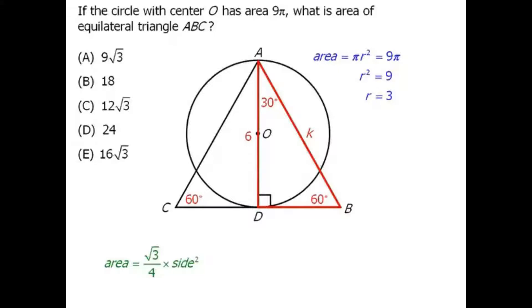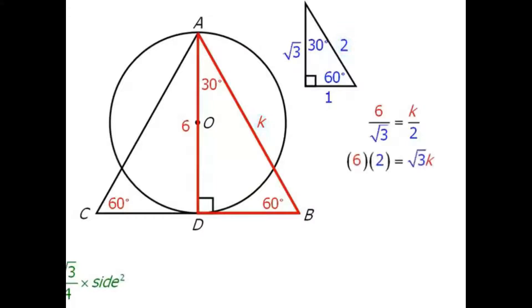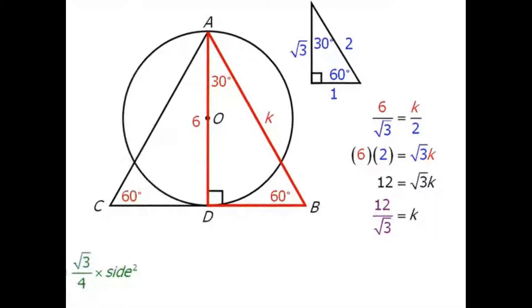We know a lot about 30-60-90 triangles. Here's the base version of this triangle. Since these two triangles have the exact same three angles, the ratios of their corresponding sides must be equal. So the ratio of 6 to root 3 will equal the ratio of k to 2. We now have an equation we can solve for k. Cross-multiplying and simplifying the left-hand side, then dividing both sides by root 3 gives us k.